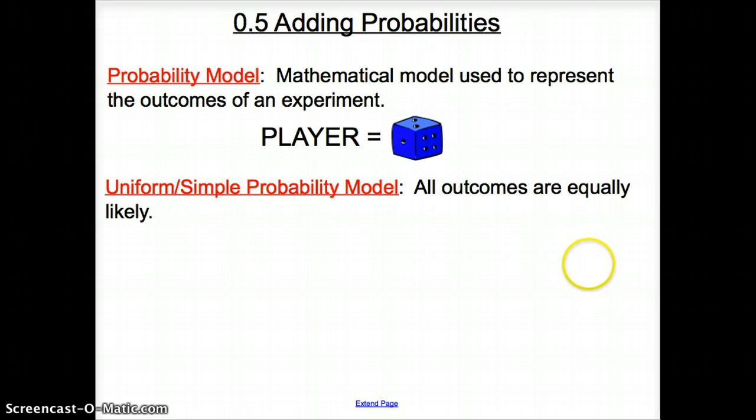So let's go ahead and start this off with the probability model. All it is is a mathematical model used to represent the outcomes of an experiment. So say we had pieces of paper with each letter of the word player on them, and we wanted a model to represent us drawing out the letter P out of a hat. Well, our model, since there are 1, 2, 3, 4, 5, 6 letters in player, we could use a dice. That dice would be the mathematical model.